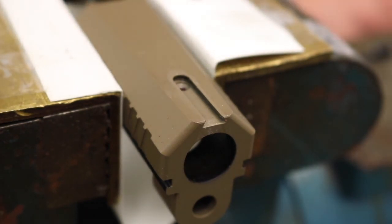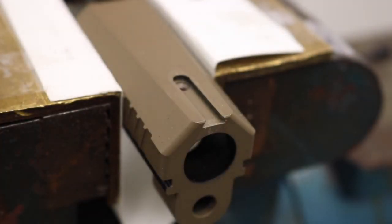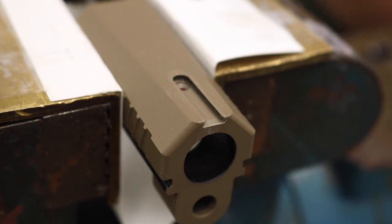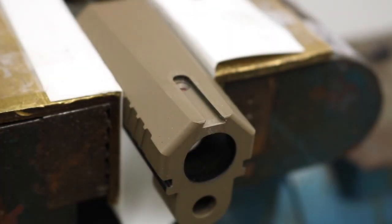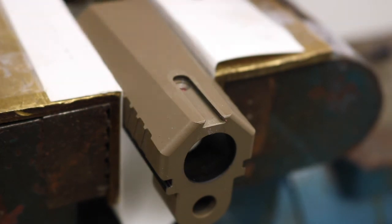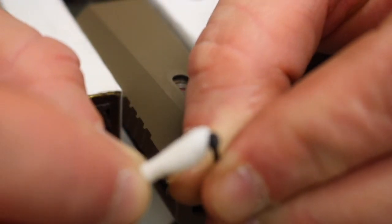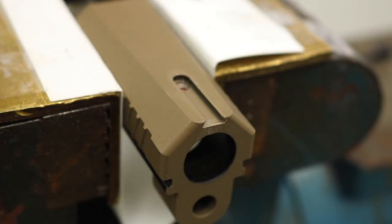We also need to locate the front sight screw that was included in the packaging. We are going to degrease it as well. The easiest thing to do on something like that, we're going to go ahead and put it on the hex key. It's a little easier to hang onto that way.